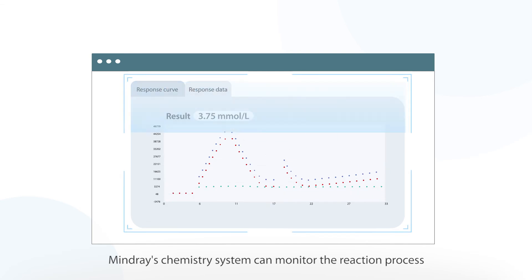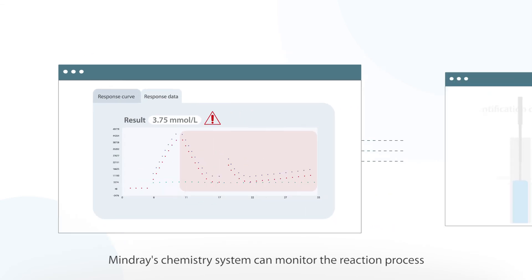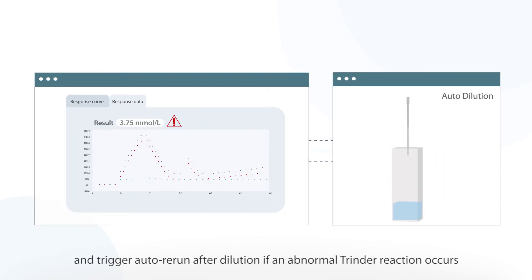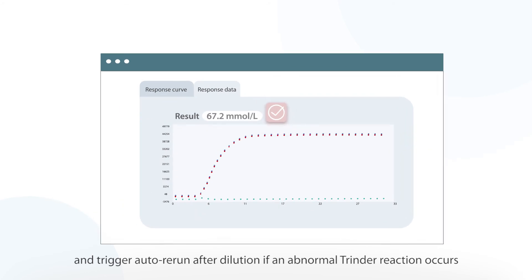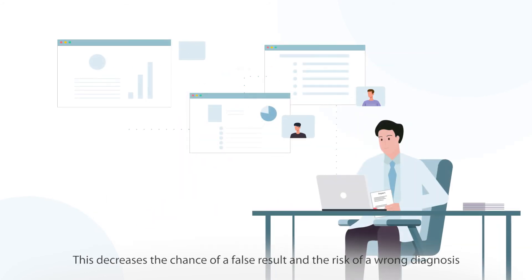MindRay's chemistry system can monitor the reaction process and trigger auto rerun after dilution if an abnormal trender reaction occurs. This decreases the chance of a false result and the risk of a wrong diagnosis.